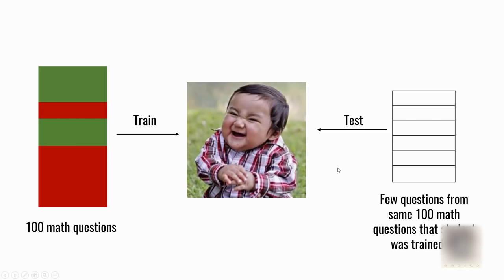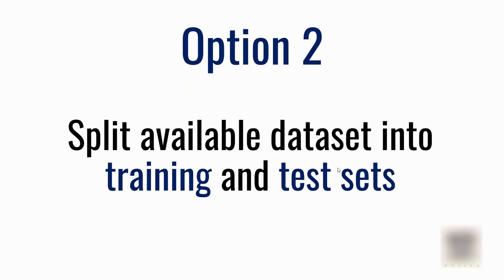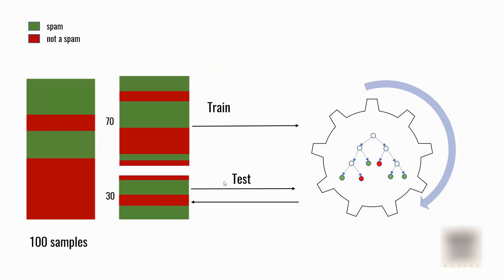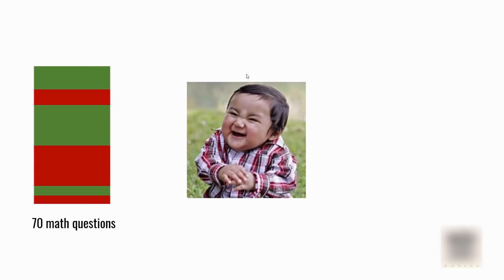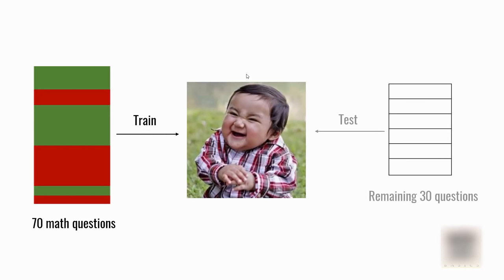This is not a very good way of measuring someone's math skills because he has already seen those questions. What if he gets 100 out of 100 — there's no point, he's already seen them. So the second option is to split the samples into training and test datasets. Out of 100, I'll use 70 for training and 30 for testing. We've been using this train-test split method in all our supervised learning tutorials. Going back to the student example: you give this person 70 questions for preparation and reserve the remaining 30 for the test — he hasn't seen those 30.